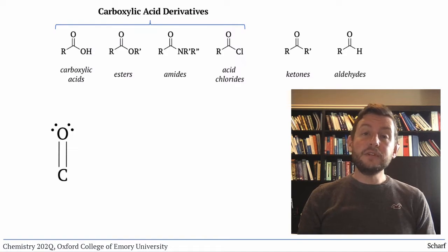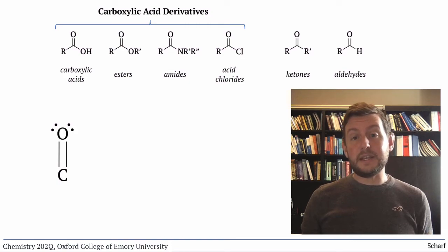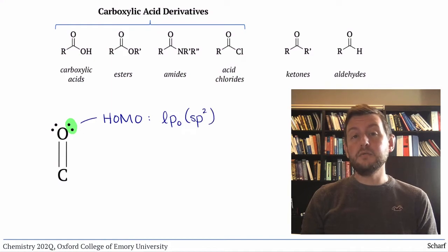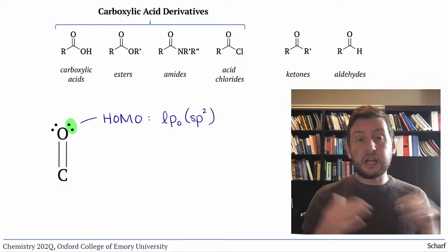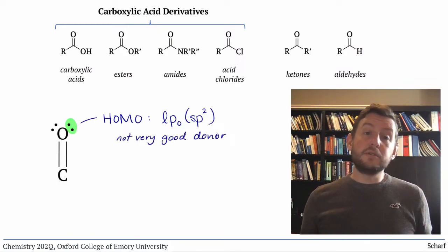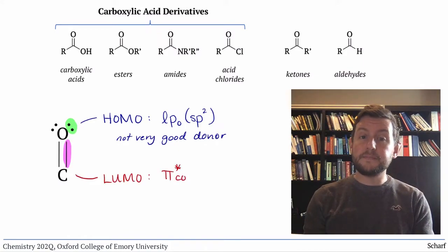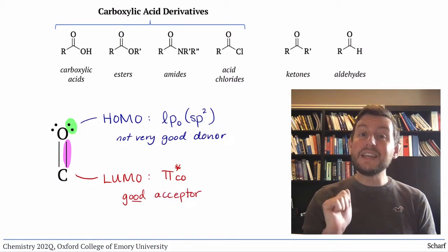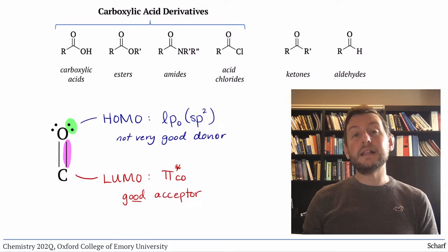The frontier molecular orbitals of the carbonyl group determine its reactivity. Its HOMO are the sp2 hybridized lone pairs on oxygen, which are, as nucleophiles go, not particularly high energy. So carbonyl groups don't usually behave as donors of electrons. Its LUMO is CO pi star, which is quite a good acceptor orbital. So carbonyl groups typically act as electrophiles.